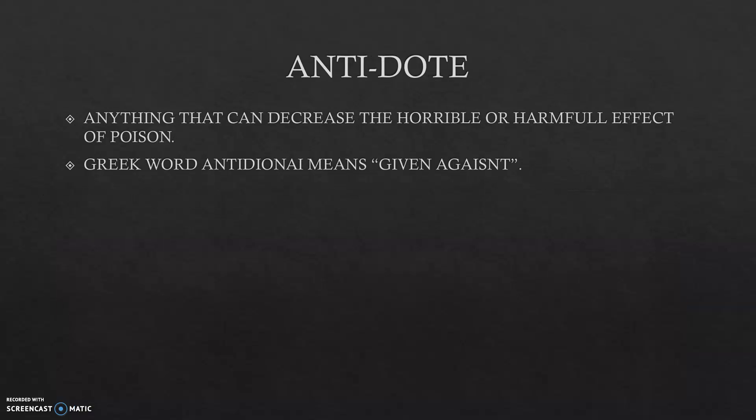So what is an antidote? Anti means against. Anything that can decrease the harmful effect of the poison is termed as an antidote. It is actually coming from the Greek word 'antidotum', meaning 'given against' — that is, given against the toxicity.